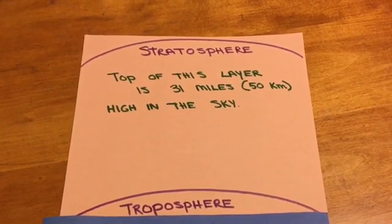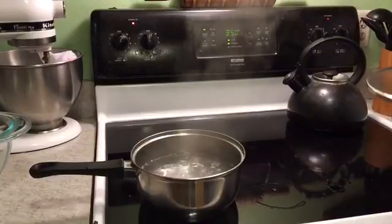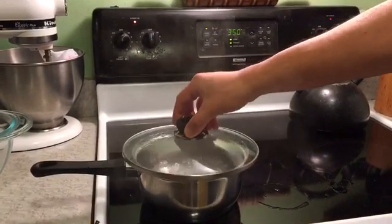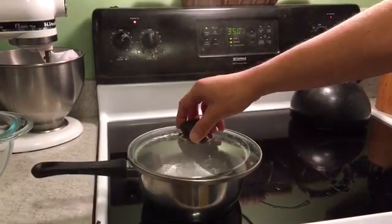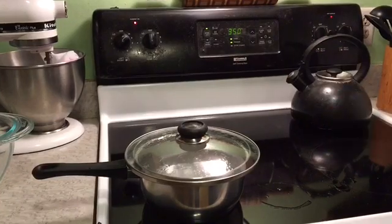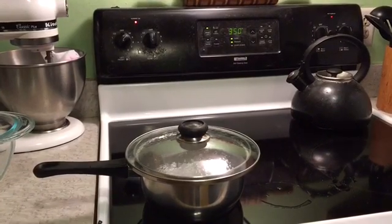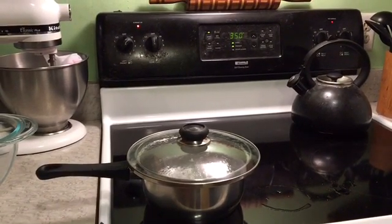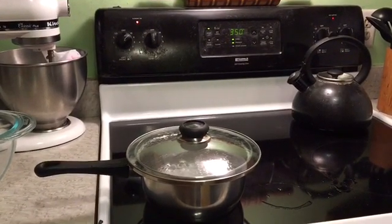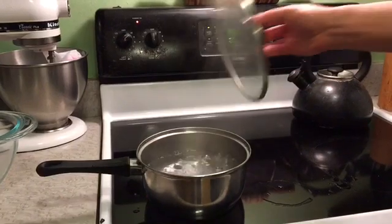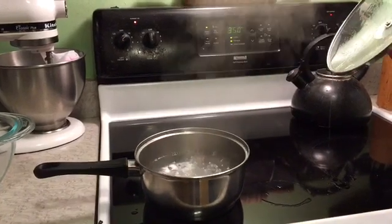This is called an inversion and it is much like a lid being put on clouds and thunderstorms, preventing them from forming — much like what happens when we put this lid on top of the steam and prevent the steam from rising up out of the pot.